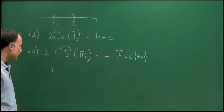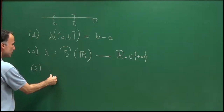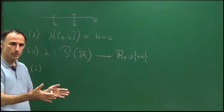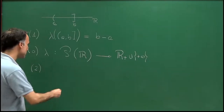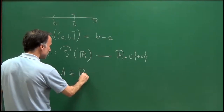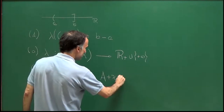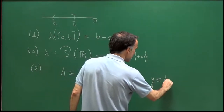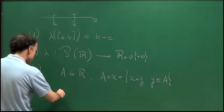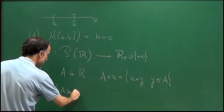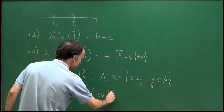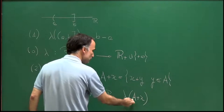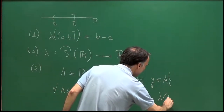What else would we like? I think you all agree — let me represent by property 2 — which means that if you take a set and you just translate it by a certain number, it's natural to ask that the measure of this set is equal to the measure of the translated set. So if A is a subset of R, let A plus x be the set of all points x plus y where y belongs to A. For all A subsets of R and all x in R, we would like lambda(A+x) to equal lambda(A).